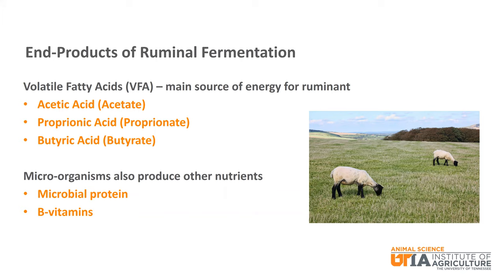The primary end products of ruminal fermentation are volatile fatty acids, or VFAs. They are the main source of energy for the animal. The three main VFAs are acetic acid or acetate, propionic acid or propionate, and butyric acid or butyrate. The microorganisms also produce other nutrients for use by the animal — they can turn non-protein nitrogen into microbial protein. Urea is a common example of non-protein nitrogen. There are also some B vitamins that are produced by fermentation.